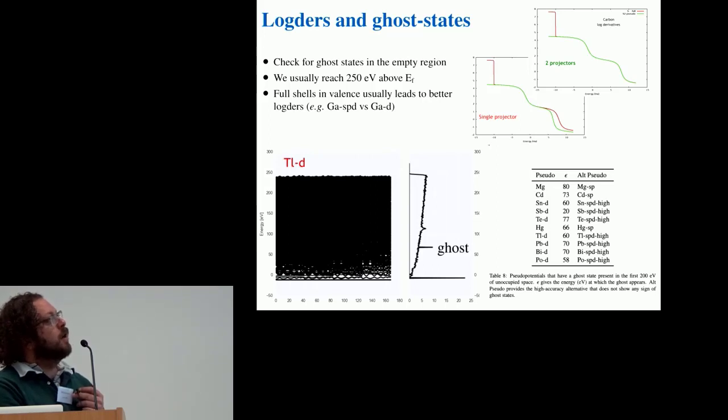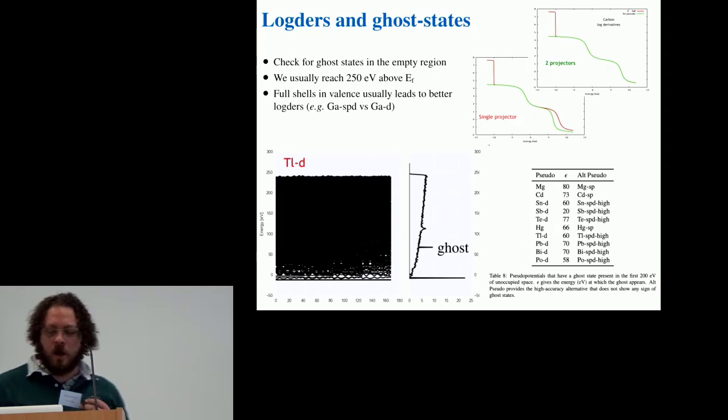And in this case what we found is that if we close the shell, if we add for example in thallium also the s and p semi-core states in the valence, then the logarithmic derivative has an excellent agreement with the all-electron counterpart and we can get rid of the ghost state.